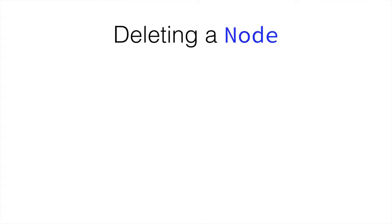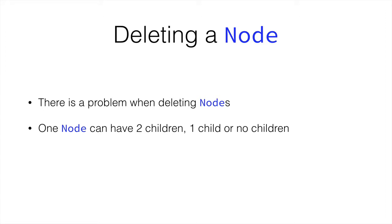So how could we delete a node? There is a problem when deleting nodes. Nodes can have children. They can have two children, one child or no children. So what do we do with the children if we delete the node?